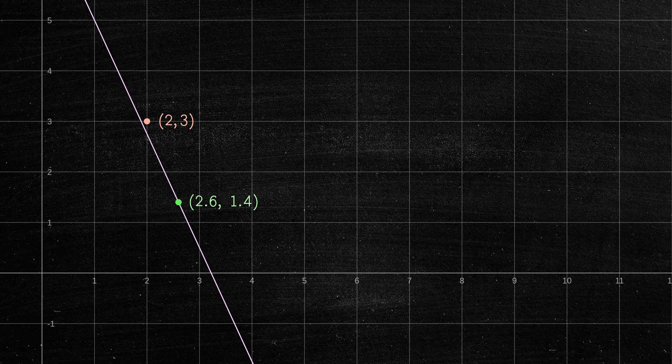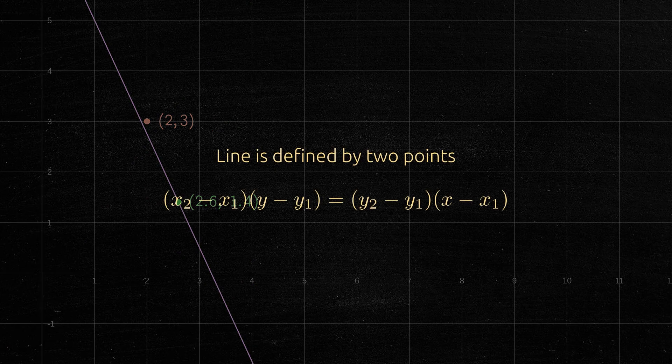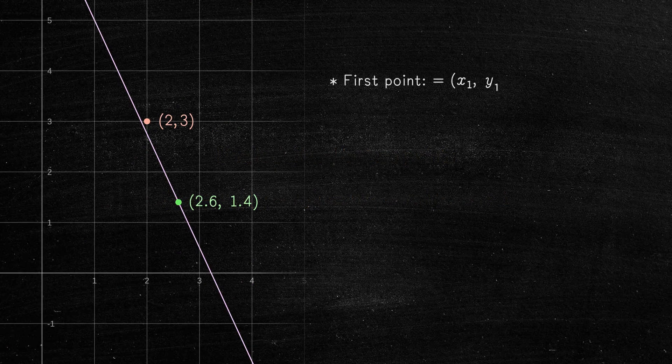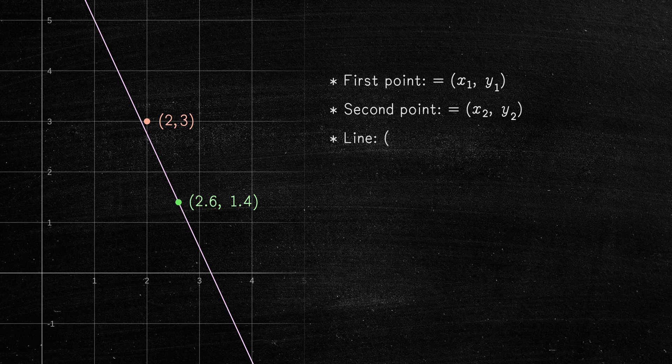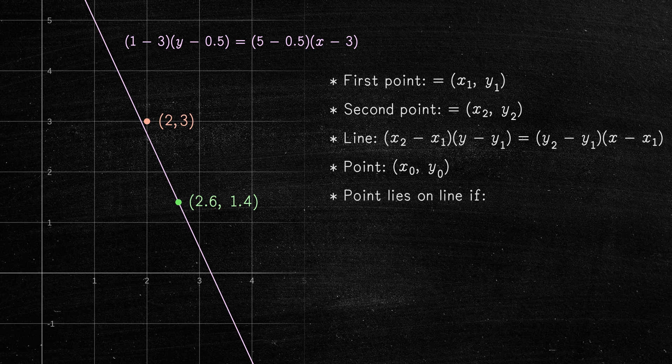The third case is when the line is defined by two points. In this case, if the point is on the line, then the following equation must be true.